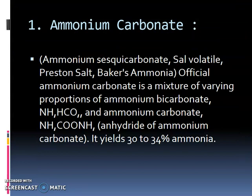Ammonium carbonate is also known as ammonium sesquicarbonate, sal volatile, hartshorn salt, or baker's ammonia. Official ammonium carbonate is a mixture of varying proportions of ammonium bicarbonate (NH₄HCO₃) and ammonium carbonate ((NH₄)₂CO₃). As a hydrate of ammonium carbonate, it contains 30–34% of ammonia.